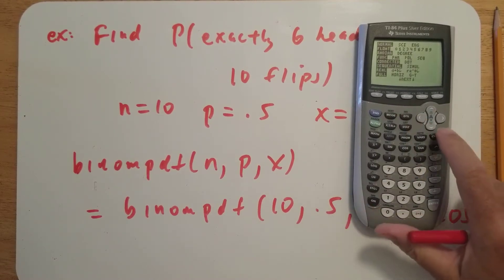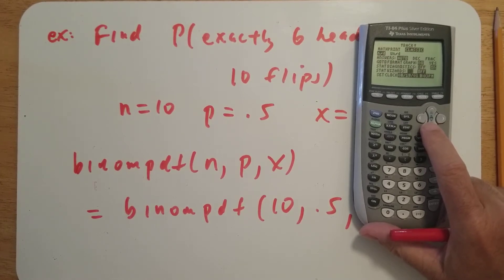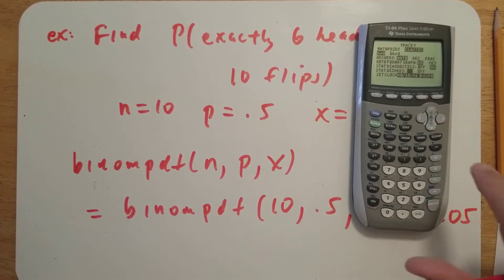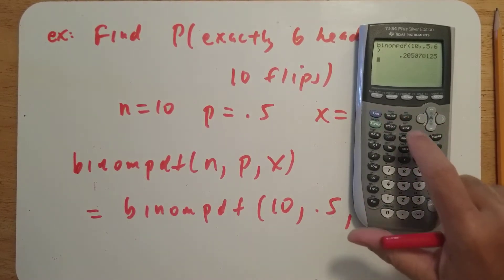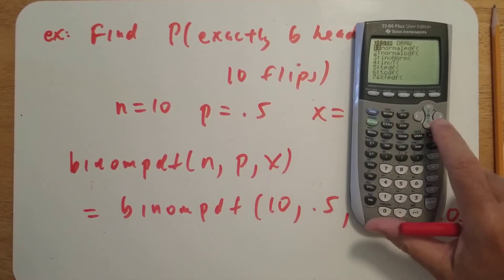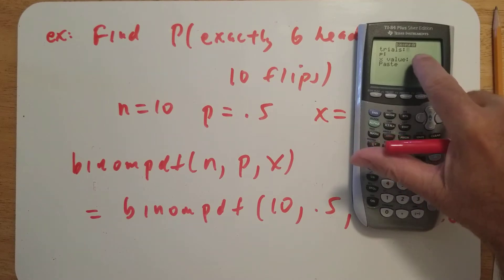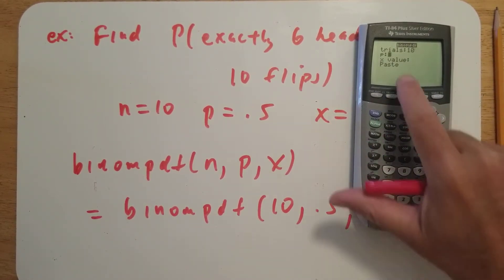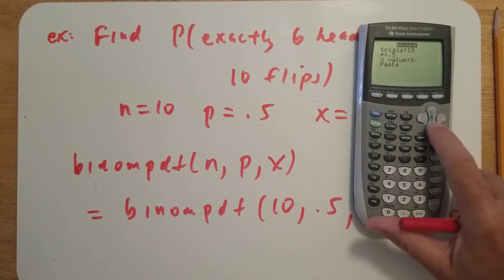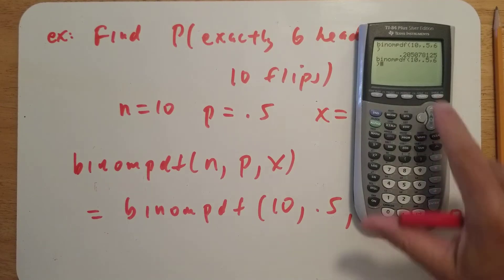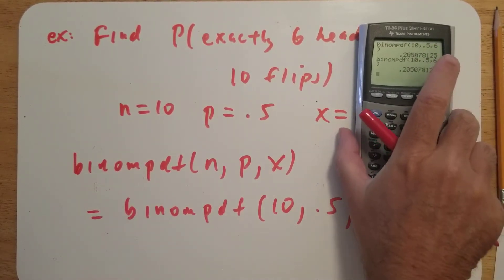Just as one other comment: if I have the stat wizard on — mine was off — turning the stat wizard on gives you a menu to enter values. Going to distributions and binompdf prompts you for trials (10), probability of success (0.5), and number of successes (6). When you hit paste, it gives the same answer. I'll leave the stat wizard on for the rest of these.